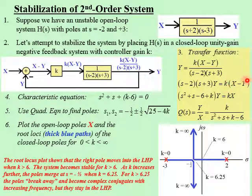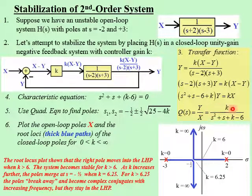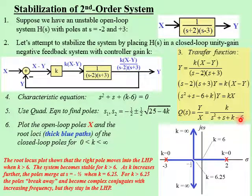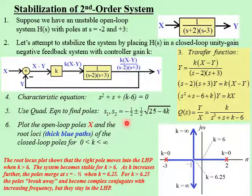Adding K times Y from the right side gives plus K, so the left side is (S squared plus S plus K minus six) times Y, and the right side is KX. Our transfer function Q(s) equal to Y over X is therefore K over S squared plus S plus K minus six. The characteristic equation — the roots of the denominator — is S squared plus S plus K minus six equals zero. Using the quadratic formula, the two poles S₁ and S₂ are given by negative one-half plus or minus one-half times the square root of 25 minus 4K.